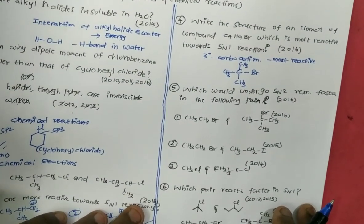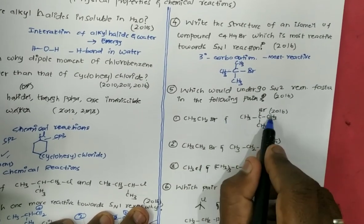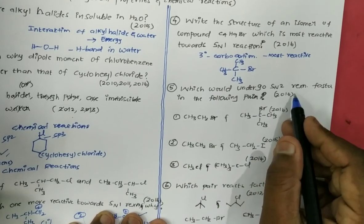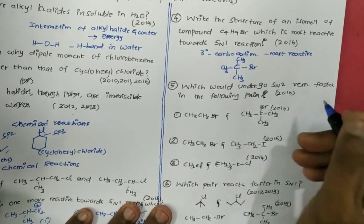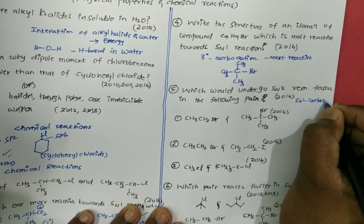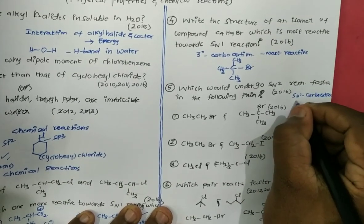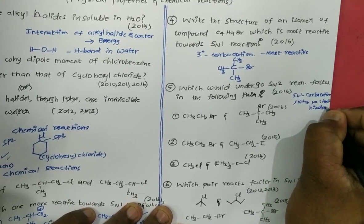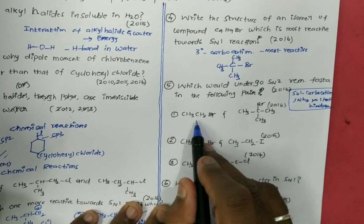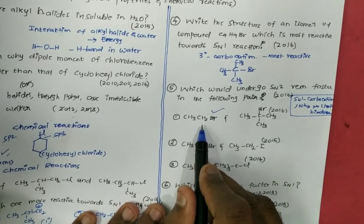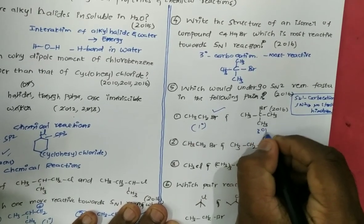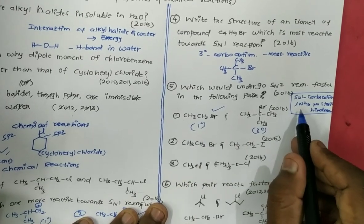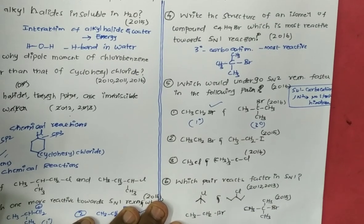The fifth question: which one would undergo SN2 reaction faster in the following pair? This was asked in 2016. For SN2, there is no carbocation — instead, less steric hindrance is needed. Between a 1° and a 3° alkyl halide, the 1° compound has less steric hindrance, so it undergoes SN2 faster. We first determine the degree; if the degrees differ, the 1° compound will clearly undergo SN2 faster.